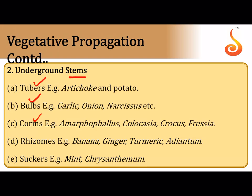Rhizomes, seen in banana and ginger, are underground stems with nodes at definite intervals with scaly leaves. Suckers are horizontal branches that develop from the base of the main plant, travel underground, then grow obliquely upwards, giving rise to a daughter plant — as in mint, banana, chrysanthemum, and pineapple.